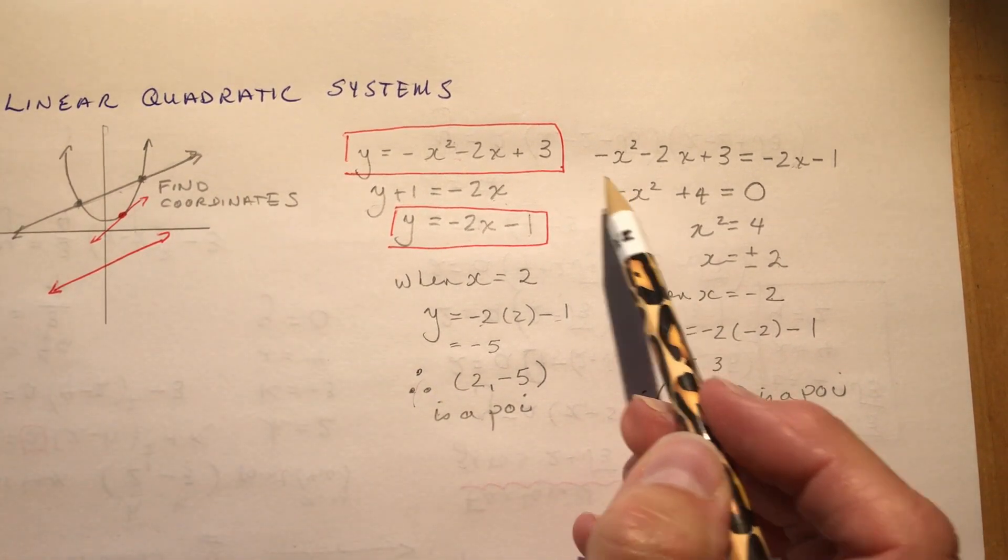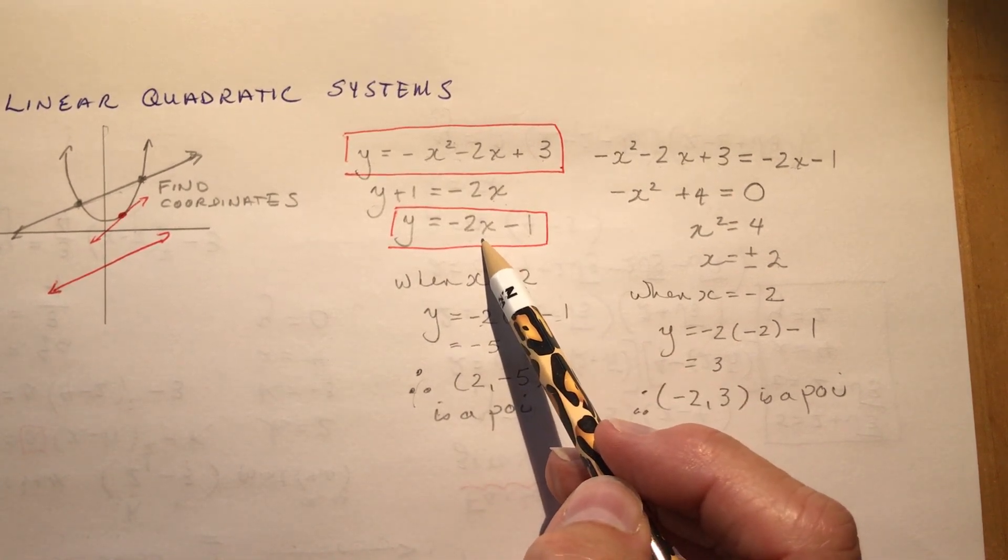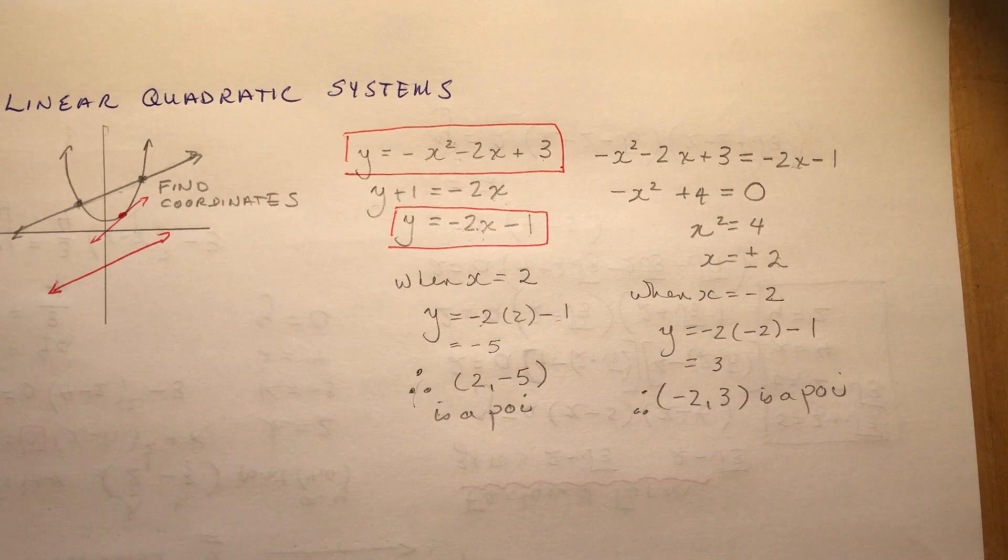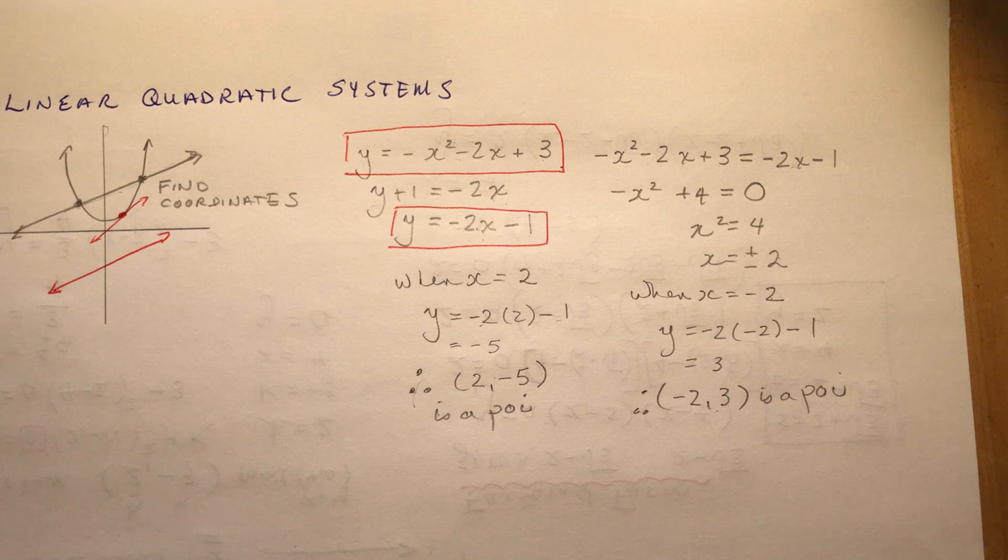This is not the graph, obviously, because this is a concave down parabola and this is a line with negative slope. So you could graph them and find the point of intersection. Maybe these would have been okay to find. But if you end up with some sort of decimal answer, obviously, graphing is going to be a very difficult task for you to perform.